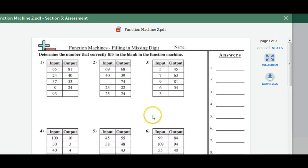And the assessment is another sheet where they're just determining the missing number. And then again, I ask them to write down the rule as well.